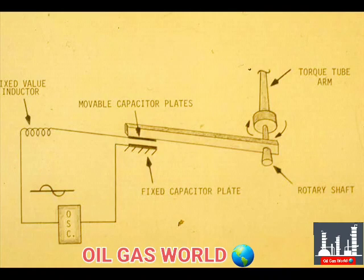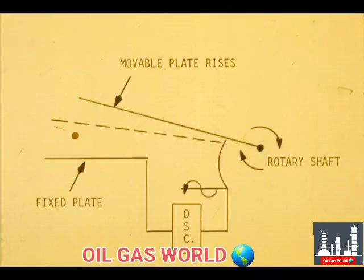Will the oscillator current increase or decrease if the rotary shaft twists clockwise? The movable plate raises; therefore, the capacitance decreases. Decreased capacitance increases impedance, so the oscillator draws less current.